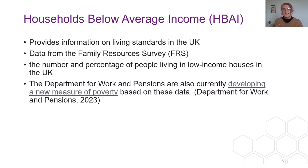The first of these is the Households Below Average Income dataset, which provides information on living standards in the UK based on household income measures for the financial year. The data for this comes from the Family Resources Survey and is used to explore the number and percentage of people living in low income households in the UK. This data is also currently being used by the Department for Work and Pensions to develop a new measure of poverty.